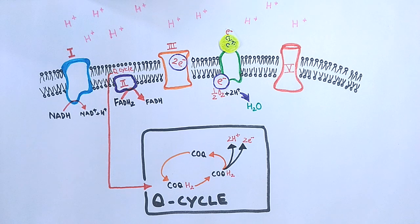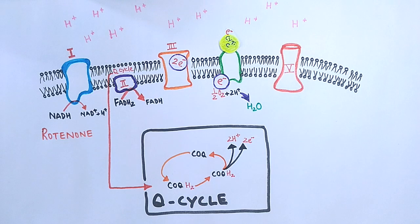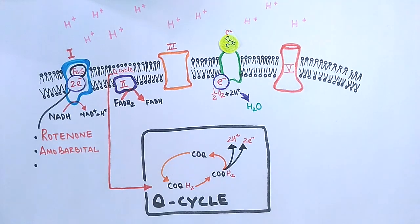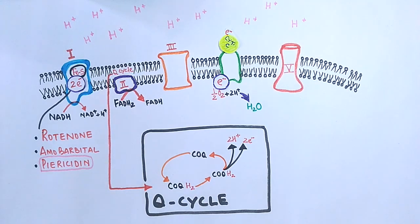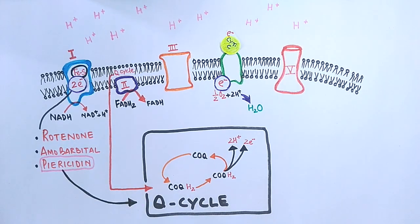First of all, let's jump towards the complex 1. There are three major compounds that disrupt the working of complex 1: rotenone, amobarbital, and piericidin. The rotenone inhibits the transfer of electrons from iron-sulfur centers in complex 1 to ubiquinone. Amobarbital also disrupts the flow of electrons from complex 1. Then we have piericidin, more specifically piericidin A, which disrupts the flow of electrons from complex 1 to the Q cycle.